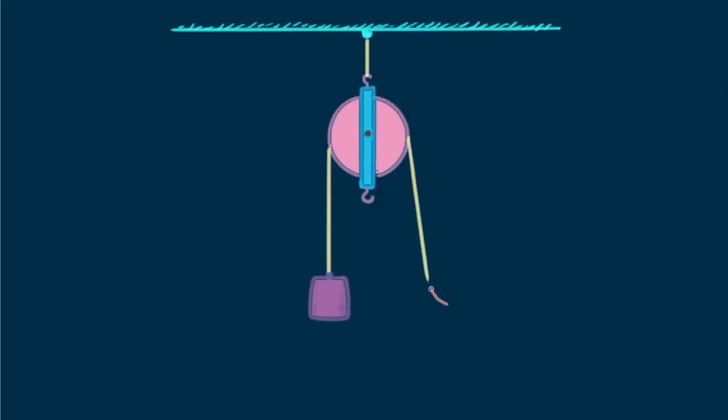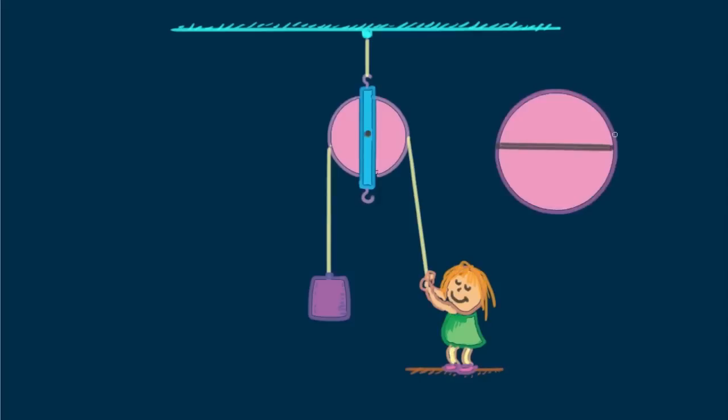An example of a lever in disguise is a simple pulley. Nellie uses a pulley to lift a load. She pulls downward and the load moves upward. This simple pulley only changes the direction of her force. Can you see the lever within the pulley that Nellie Newton uses to lift a load?